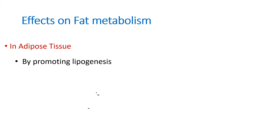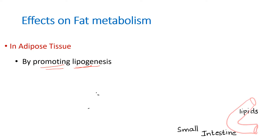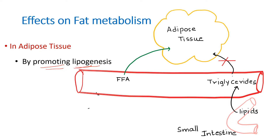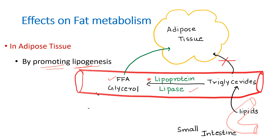The second action of insulin in the adipose tissue is promoting lipogenesis, meaning increasing storage. In the small intestine, absorbed lipids circulate in the blood as triglycerides, but triglycerides cannot be taken up into adipose tissue directly. They must be converted to free fatty acids first. This conversion is done by lipoprotein lipase. Insulin stimulates lipoprotein lipase so that triglycerides are converted to free fatty acids and taken up into adipose tissue for storage, decreasing free fatty acid levels in the blood. So insulin inhibits hormone-sensitive lipase and stimulates lipoprotein lipase.